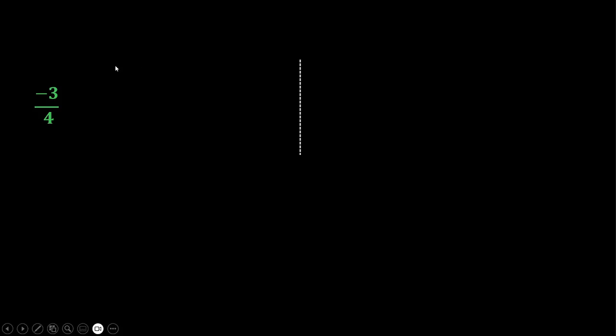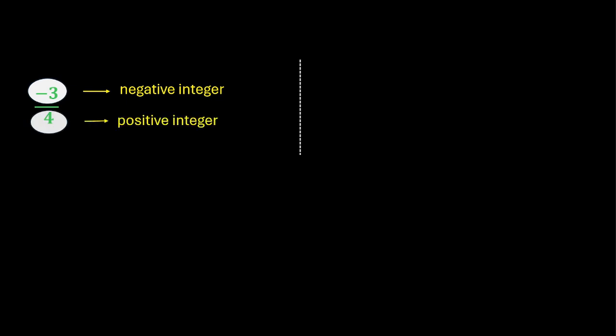Now, let us look at this rational number once again, minus 3 by 4. Over here, our numerator is a negative integer and the denominator is a positive integer. So, any rational number where the numerator is negative and denominator is positive is a negative rational number.